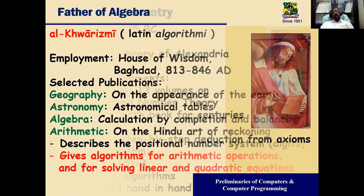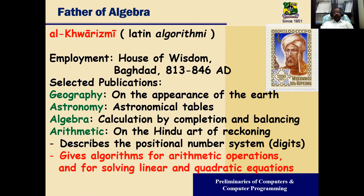The next person is Al-Khwarizmi, the father of algebra. The word 'Algorithm' is coined after this gentleman, who was working in the House of Wisdom, Baghdad, around 830 to 846 AD. He made contributions in geography, astronomical tables, and algebra. In basic arithmetic, he described positional number systems and digits. He gave algorithms for arithmetic operations and for solving linear and quadratic equations — ax² + bx + c = 0.